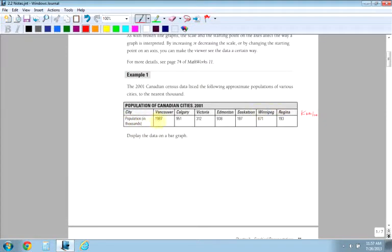Wow, look at that. 1,987,000, that's 1.9 million. 951,000. I can tell you Kamloops right now is somewhere between 80 and 90,000. So here we have all the populations of cities. It wants you to display the data on a bar graph. So we have all this data - Vancouver, Calgary, Victoria - all those cities are going to go along the bottom. I can tell you that right now.